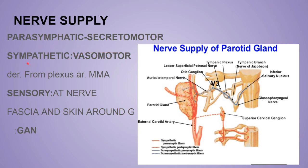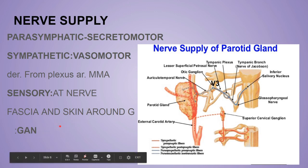The sympathetic fibers are mainly postganglionic and vasomotor in nature, derived from the plexus around the middle meningeal artery. These fibers start from the lateral horn of the T1 segment of the spinal cord. The sensory fibers to the gland come from the auriculotemporal nerve, while the parotid fascia and the skin around the gland are innervated by sensory fibers of the greater auricular nerve (C2, C3).